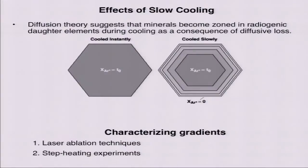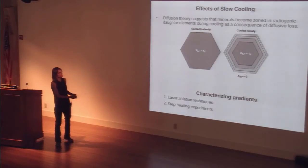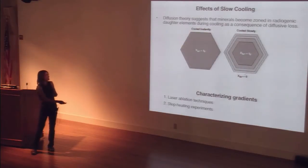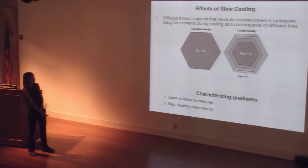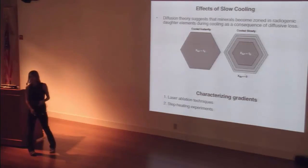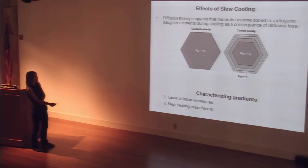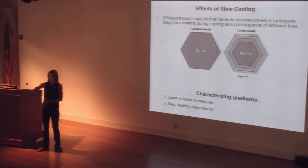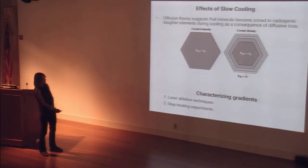One more concept: we tend to think of closure temperatures as like an on-off switch, but it's actually more like a dimmer switch in terms of how the radiogenic daughter begins to accumulate in your mineral. Sometimes we get unzoned grains and sometimes we get zoned grains. For a mineral like mica in the argon system: if we take our sample and cool it instantaneously, we get a uniform distribution of ages across our sample. However, if we cool it really, really slowly — taking it slowly through the regime of partial retention and partial loss — you can get your crystal to be zoned, with younger ages at the edges than in the interior.